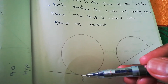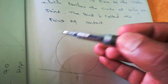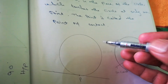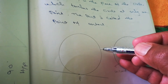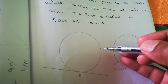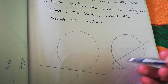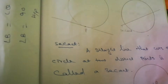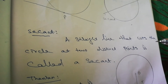If you draw a line anywhere, it will touch the circle at one point — that is called a tangent. If the line is touching in two points, that is called a secant. A secant is a straight line that cuts the circle at two distinct points.